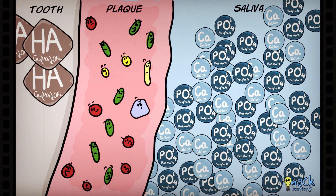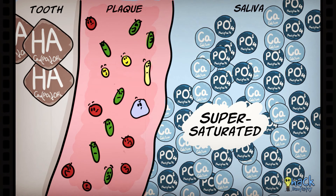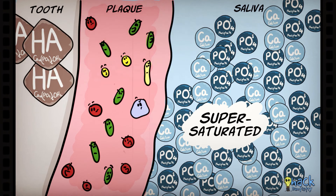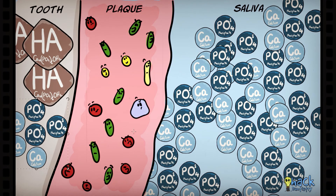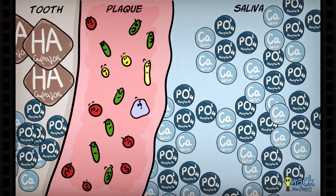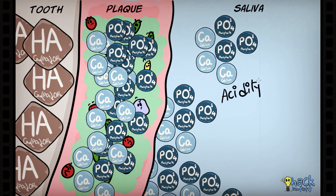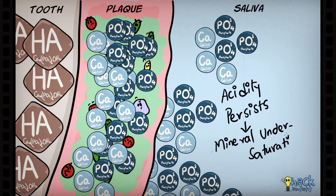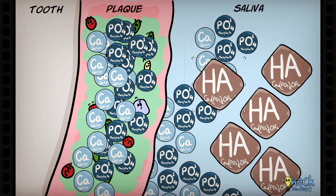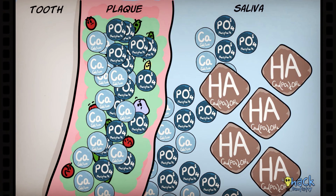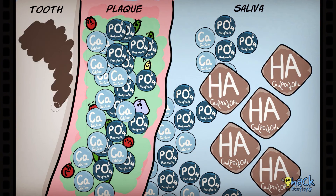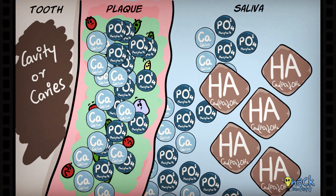On removal of the acidic environment, the saliva now supersaturated with minerals precipitates minerals back to the tooth, remineralizing it. However, if the acidic environment is going to persist, hydroxyapatite crystals would continue to disintegrate, finally forming dental caries and cavitation on the tooth surface.